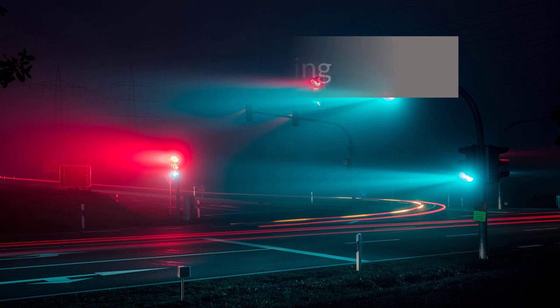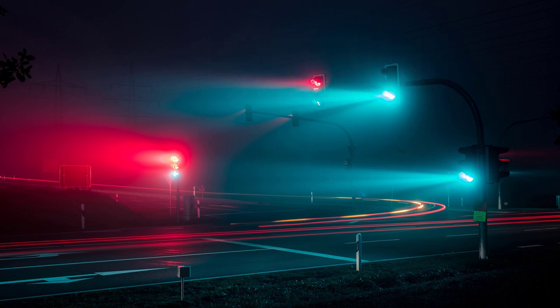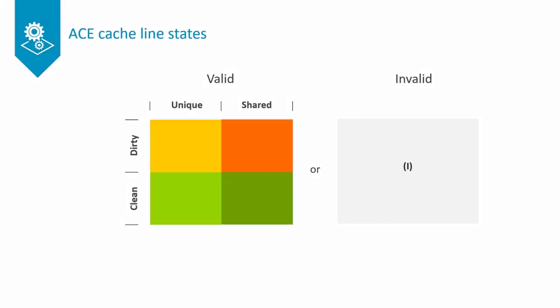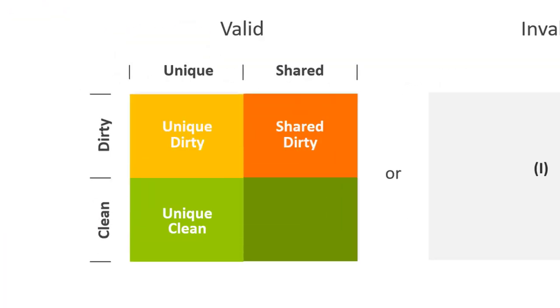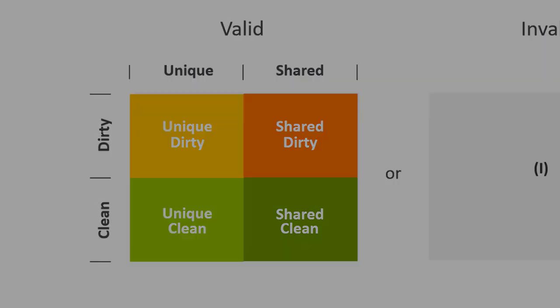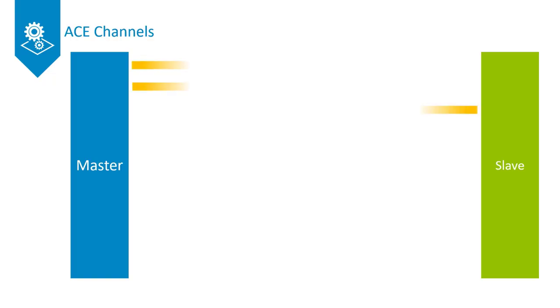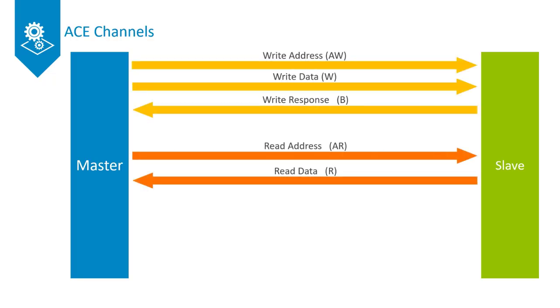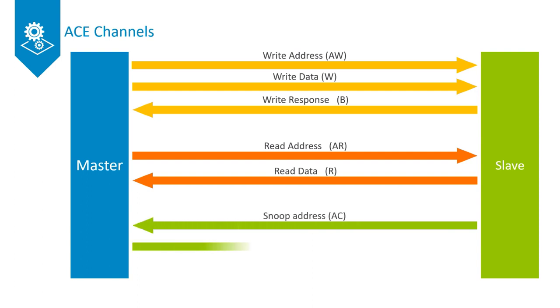The course looks at the importance of having system-level coherency and how ACE can be implemented to support this. We look at how ACE's cache line states provide the components of a system with the information needed to run coherently, and how ACE provides additional channels and signals to that of AXI, which enables system-level coherency.